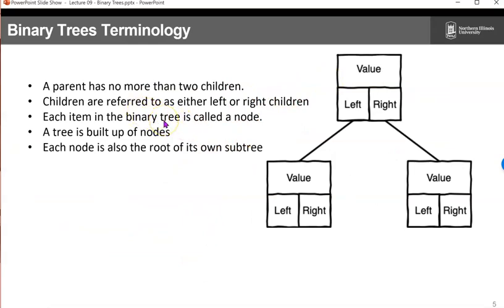A parent has no more than 2 children. Children are referred to as either left or right children. Each item in a binary tree is called a node, and a tree is built of nodes. Each node is also the root of its own subtree. So here we've got a value node, a node with a value of left and right, and it points to a child, which also has a node with a value of left and right, which is a subtree because it can point to nodes with values of left and right.